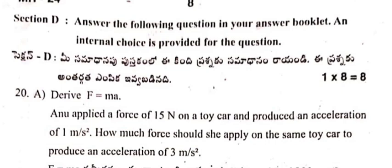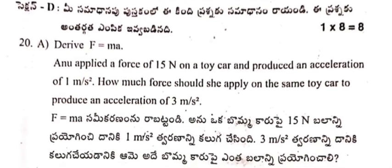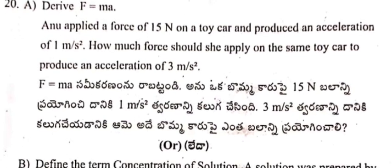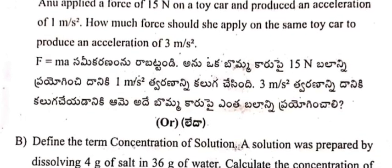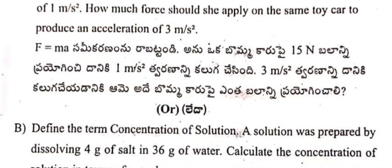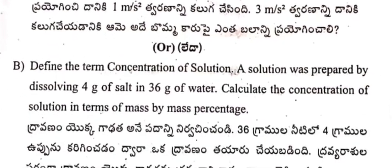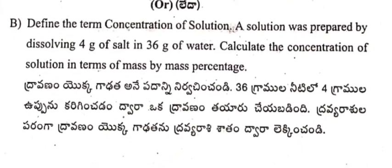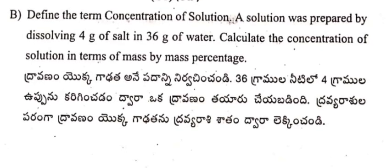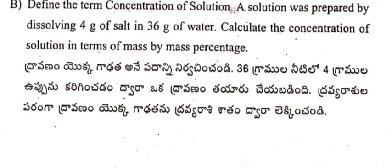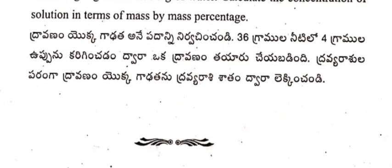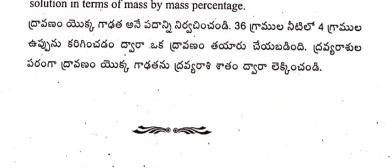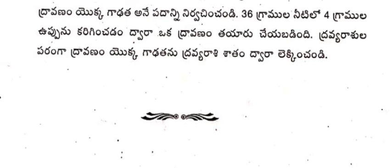Section D — internal choice is provided. Question 20a: Derive F = ma. A force of 15 newtons applied on a toy car produces an acceleration of 1 m/s². How much force should be applied on the same toy car to produce an acceleration of 3 m/s²? Question 20b: Define concentration of solution. A solution was prepared by dissolving 4 grams of salt in 36 grams of water — calculate the concentration in terms of mass by mass percentage.